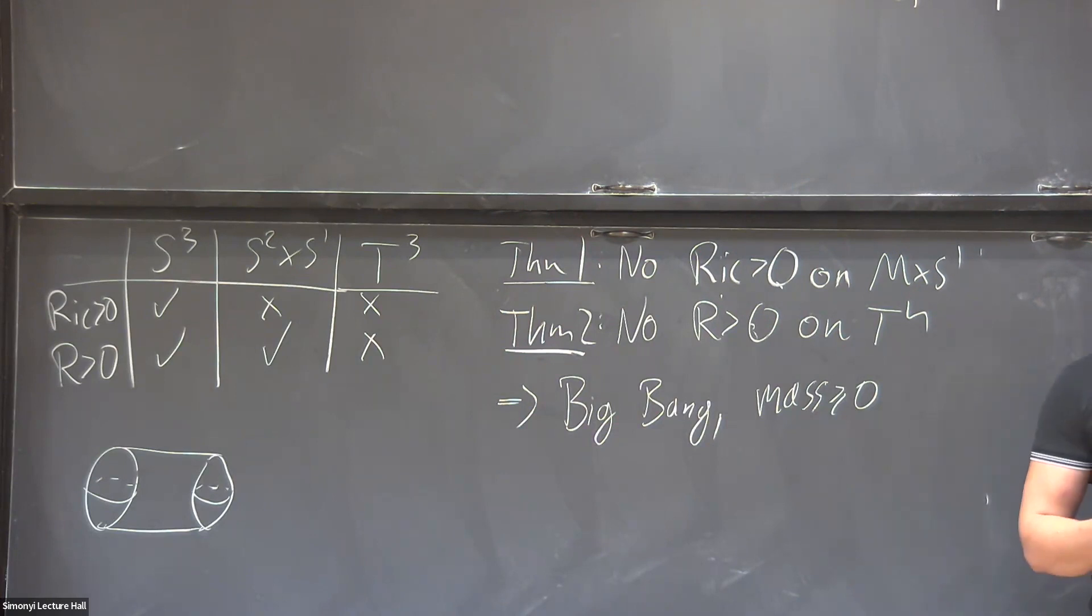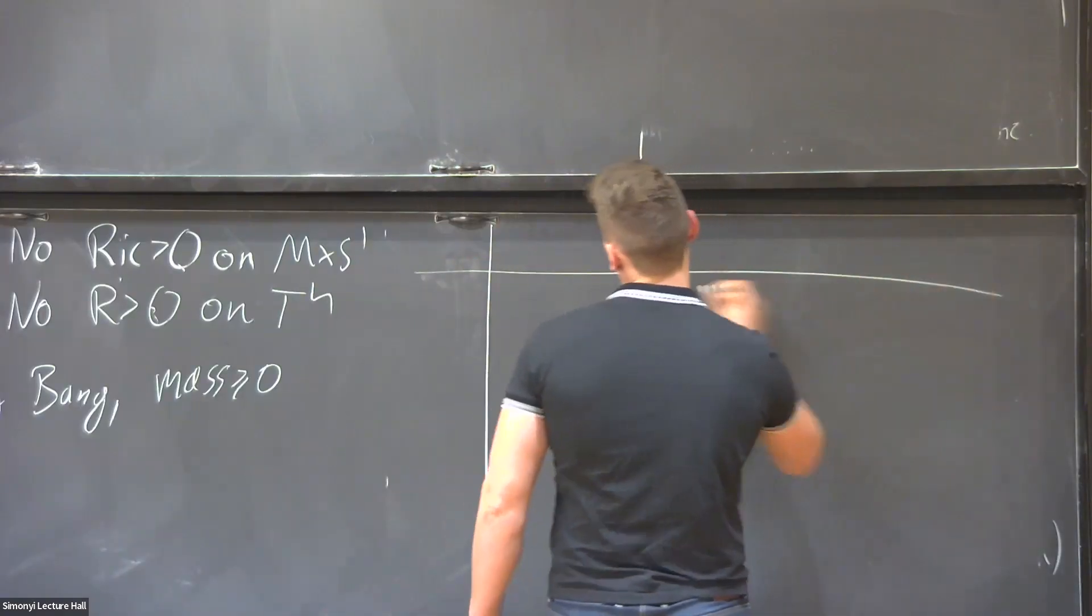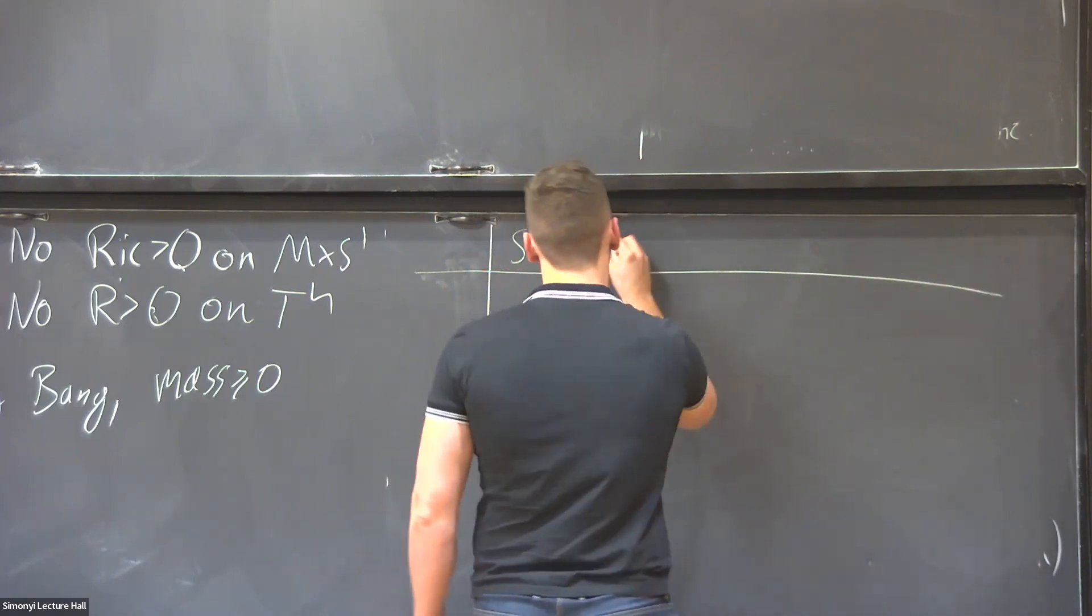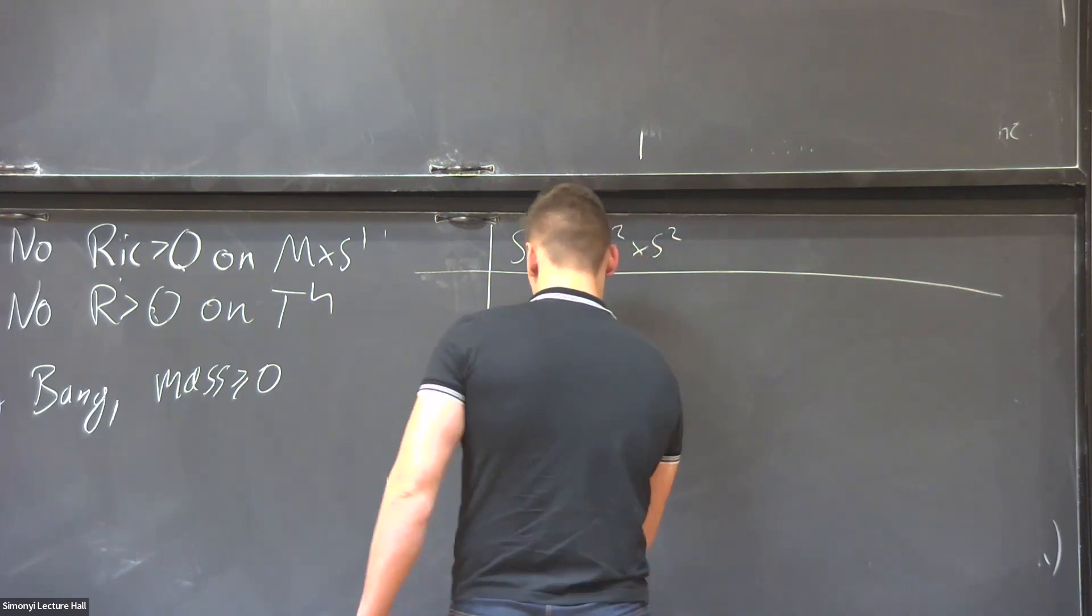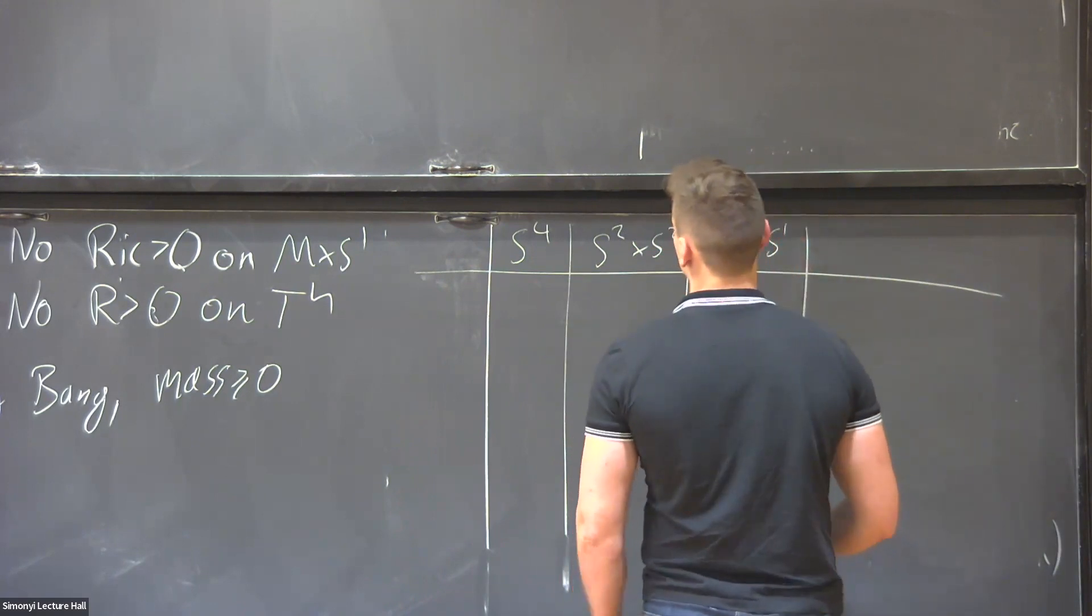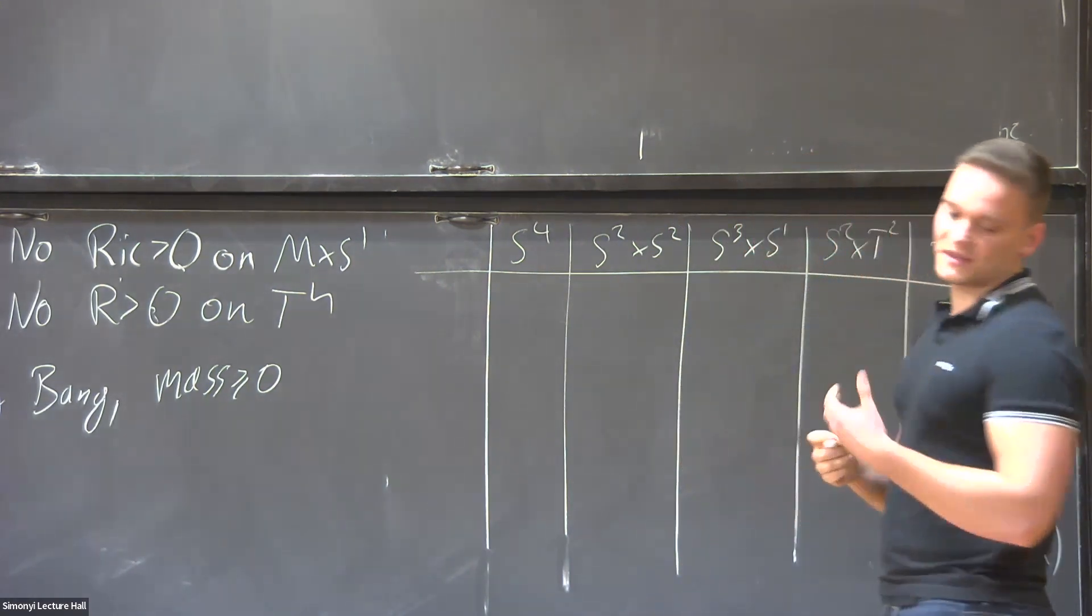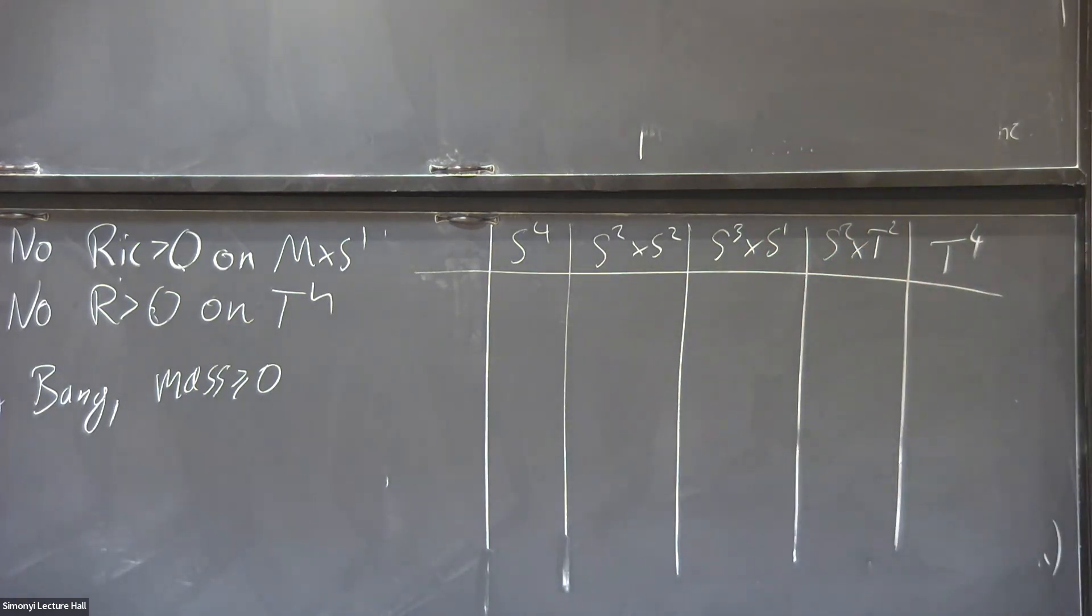But in dimension four things actually going to get more complicated. Quite a bit, actually. So in this case, I want to look at now S⁴, S² × S², S³ × S¹, S² × T², and the torus T⁴. And now because we're in higher dimension it will be again even a bit more interesting to see what kind of curvature we want to use. And let me for this, explain what kind of curvature we have in dimension four. So I'll just take here some surface Σ and then at any point inside Σ.